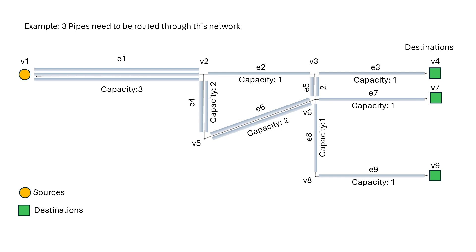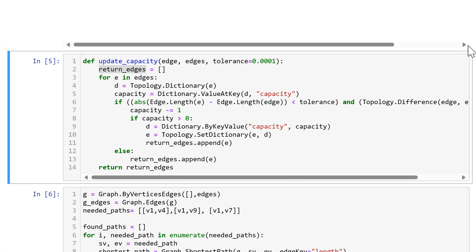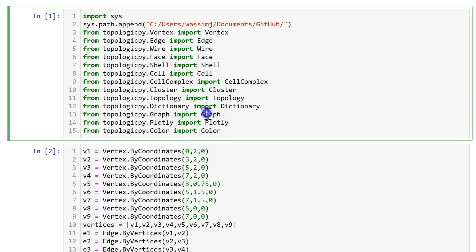This is a very simple network that we could solve by hand, but you can imagine a much more complicated multi-floor huge building with cable trays everywhere — it would be very difficult to solve by hand, and you would want an algorithm to do that. Let me show you how we solve this in Topologic Pi.